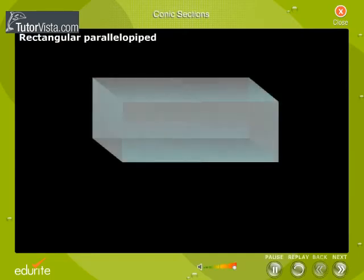Conic sections. When a solid is cut by a plane, the curve common to the solid and the plane, that is, the curve which lies on the surface of the solid and the plane, is called section of the solid by a plane.